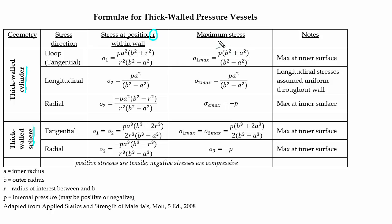Or if you simply want the maximum stress, then you use this column here. Note that the maximum stress is at the inner surface for all of the different types of stresses, with the exception of the longitudinal stress. The longitudinal stress is assumed to be uniform throughout the wall.